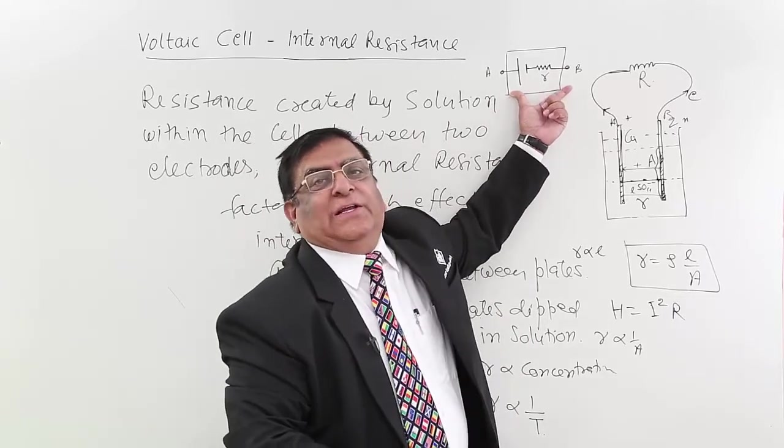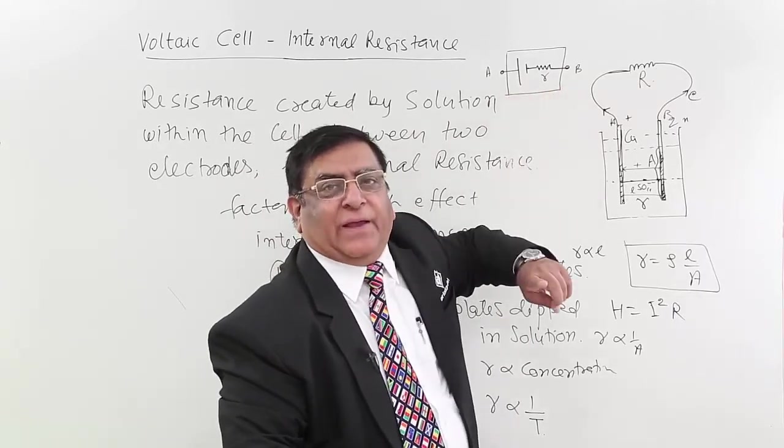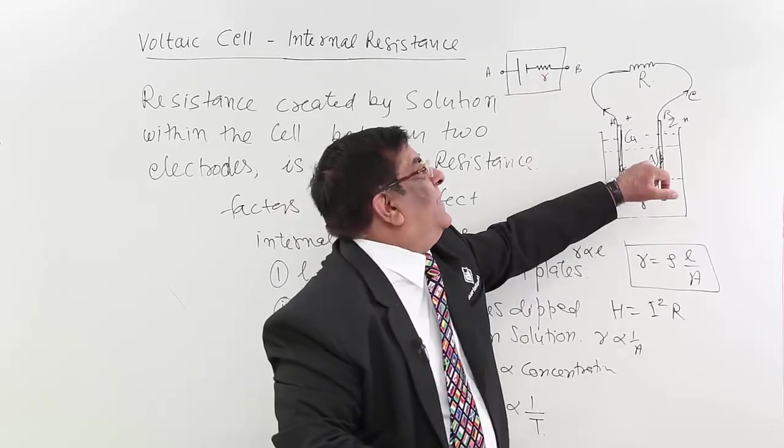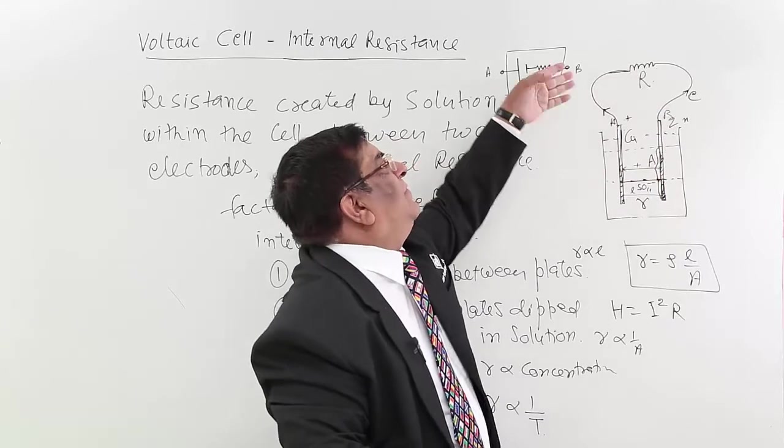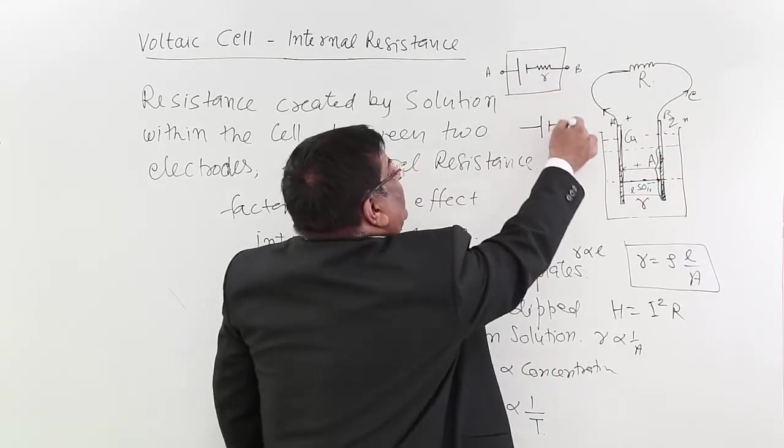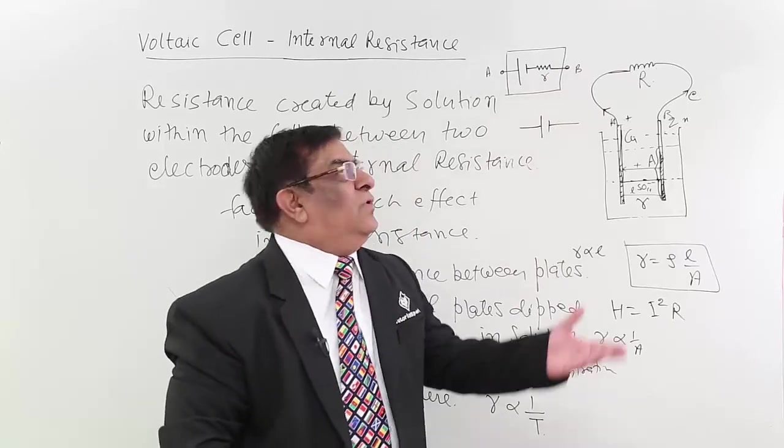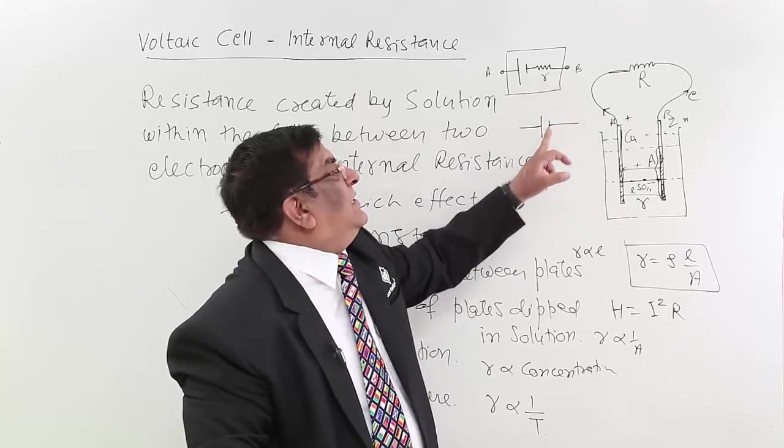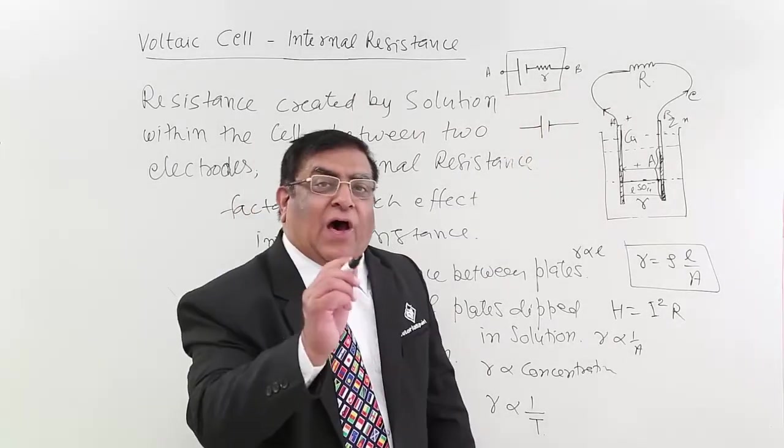But sometimes when this internal resistance, which is very small compared to external resistance, then we omit it and we write the cell like this by omitting this. So both things we are using. When we are very careful we will use this, otherwise generally we will use this.